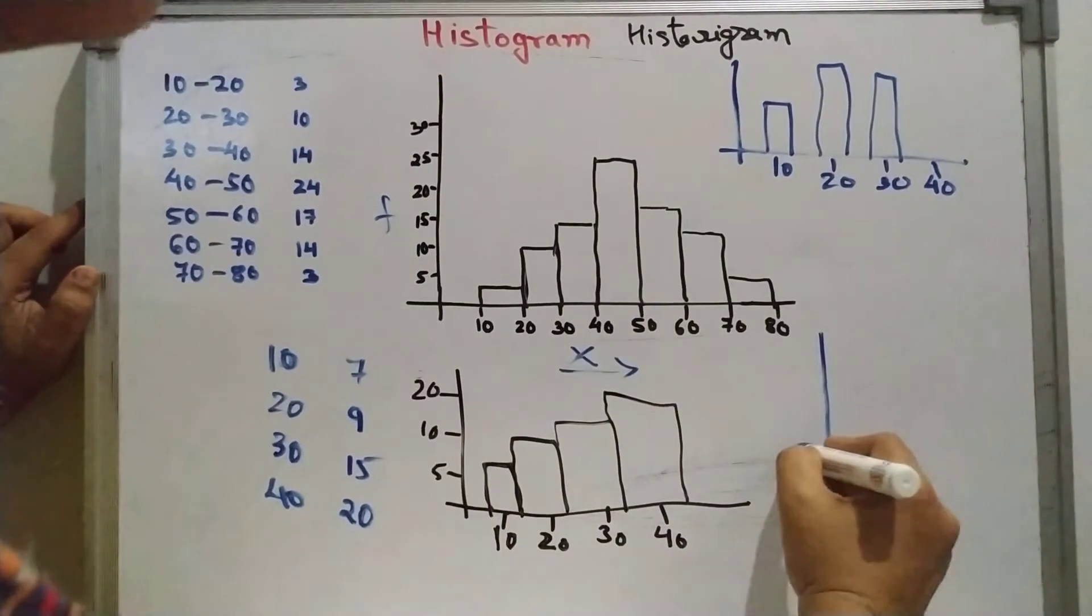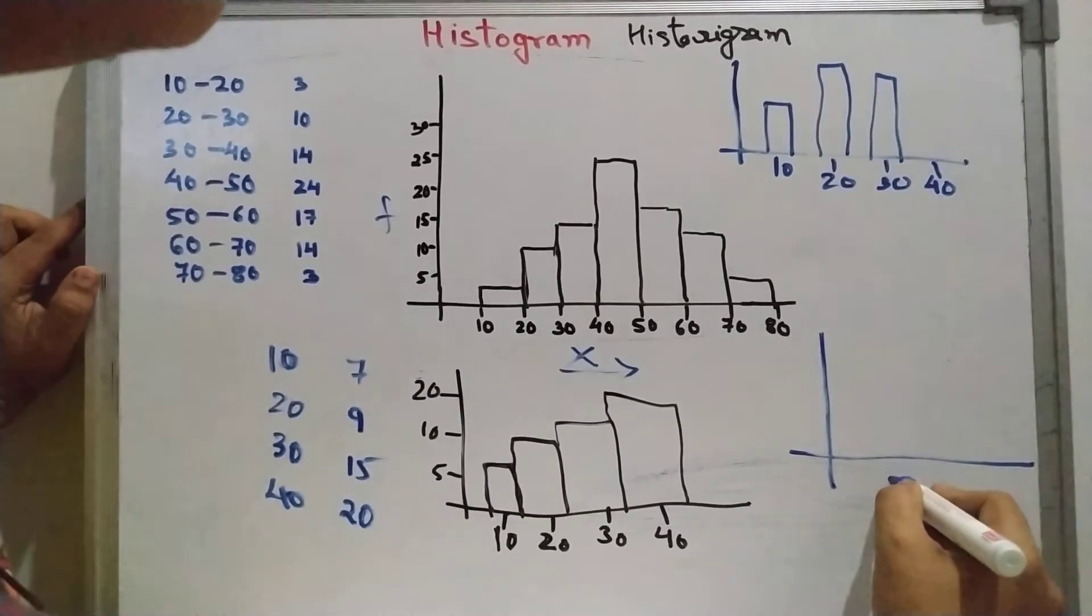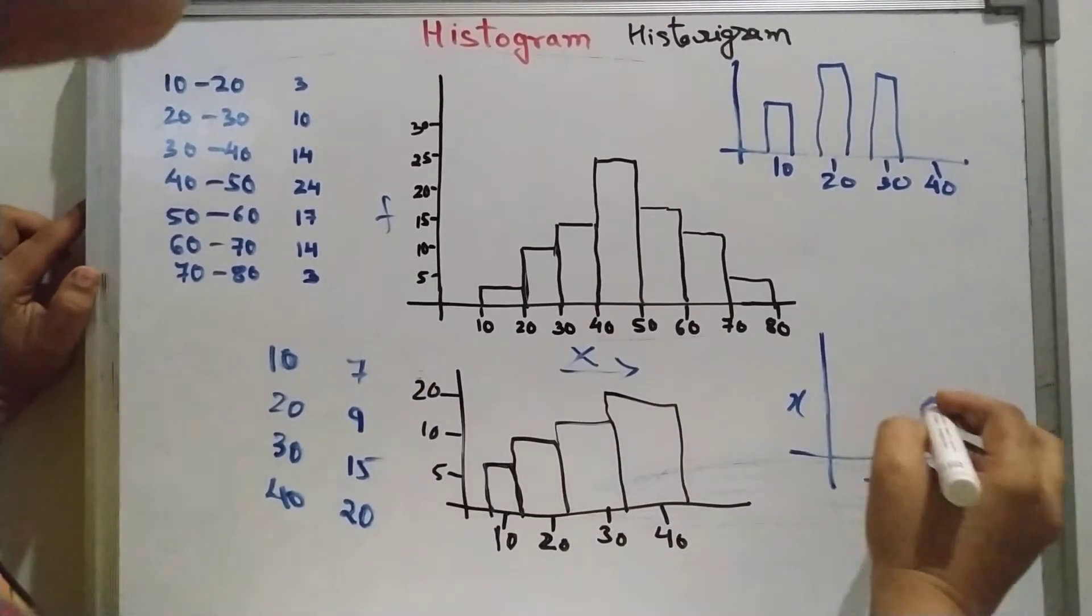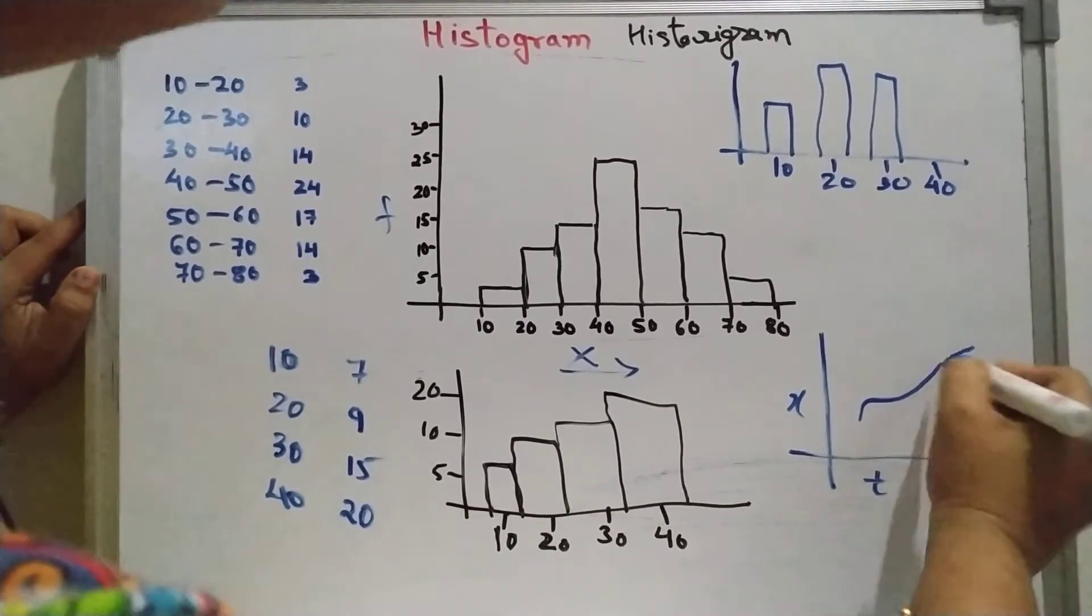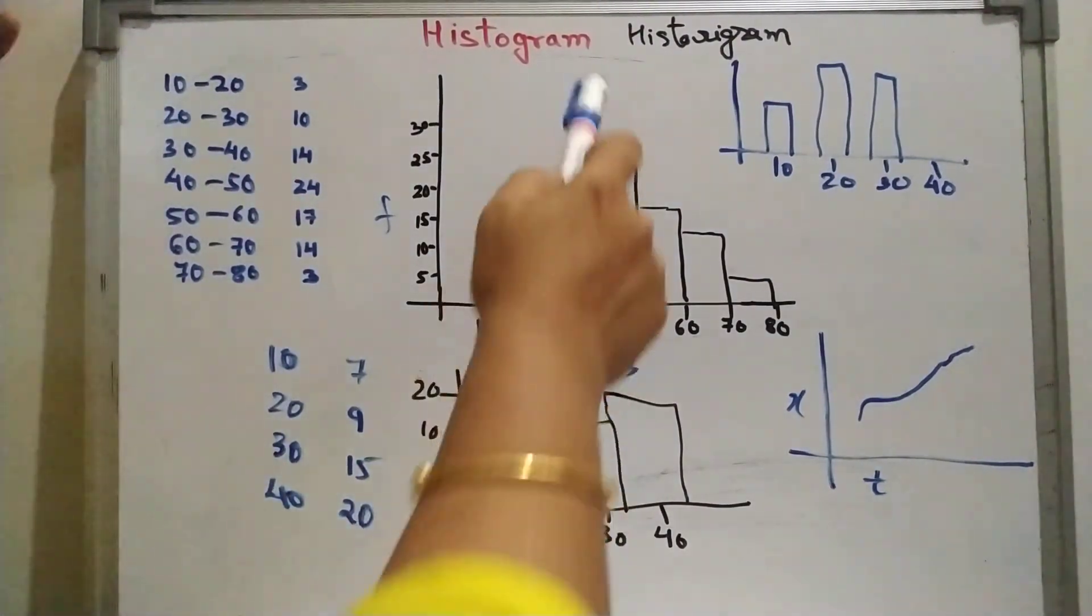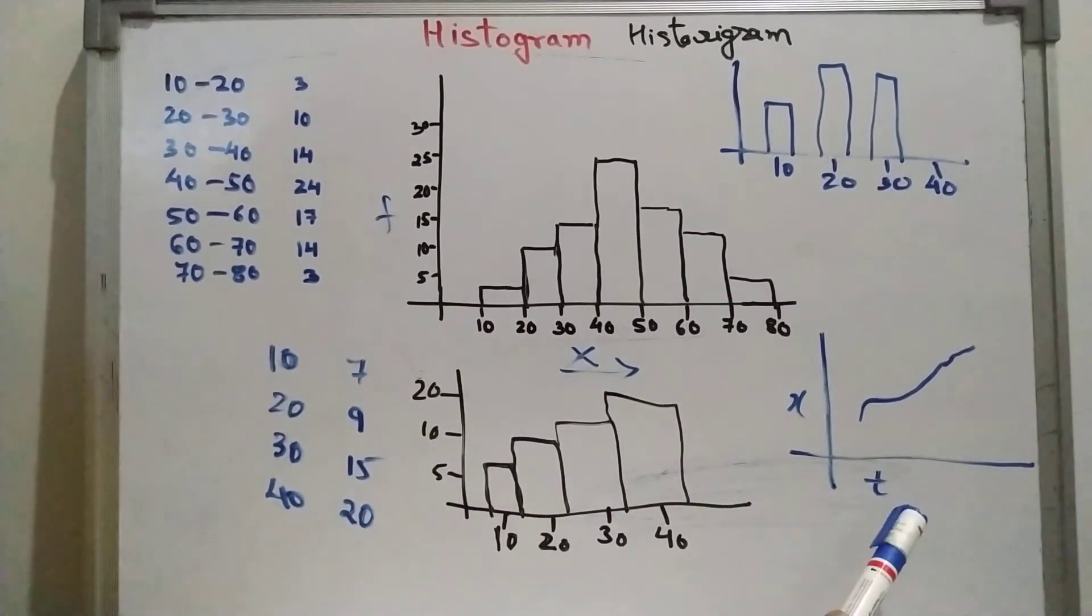Historygram is a time graph or line graph. We can say we plot the time here t against the variable x. So we get a curve like a line graph. So it is called historygram. Do not confuse historygram with histogram. It is just a line graph.